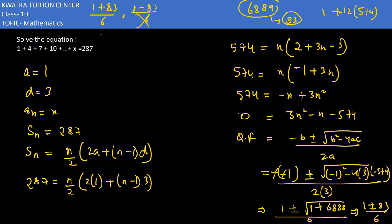1 plus 83 is 84, 84 over 6 would result in 14. So n is 14. a14 is nothing but a plus 13d. a is 1, d is 3, so 13 into 3 is 39, 39 plus 1 would be 40.